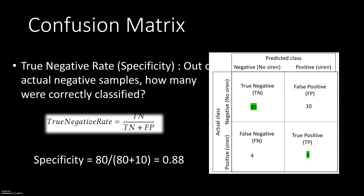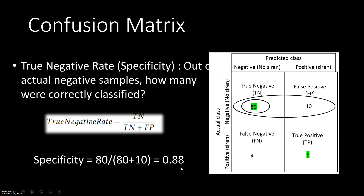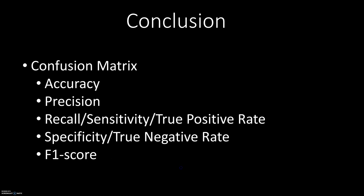The last measure is the true negative rate, also called specificity. The question is similar to the true positive rate: out of all actual negative samples, how many were truly predicted as negative? In our case the true negative rate is 88%.